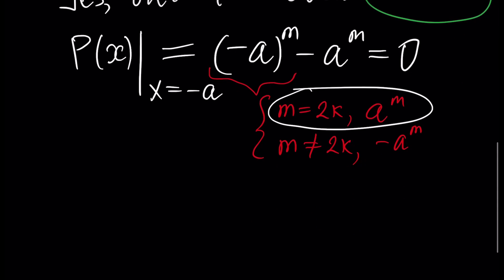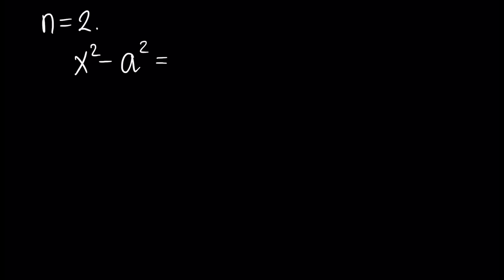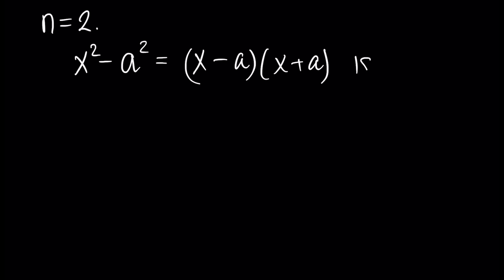Let's use the letter n. Assume n equals 2. In this case, x squared minus a squared — as we know from previously — has the representation x minus a times x plus a. So this polynomial is divisible by x plus a.